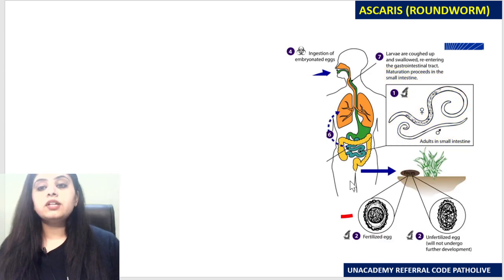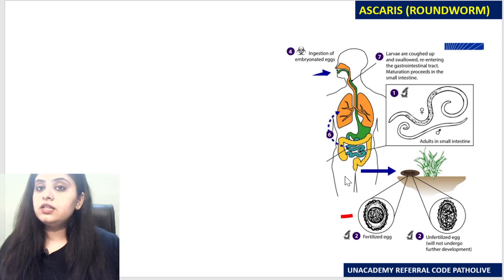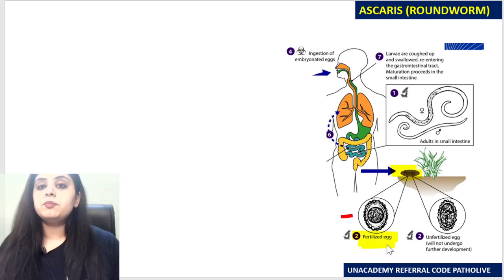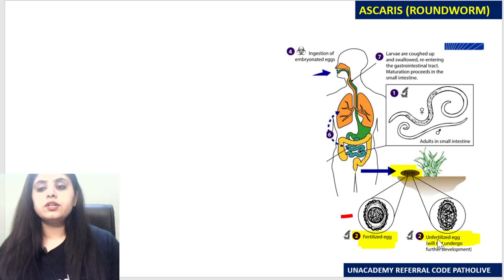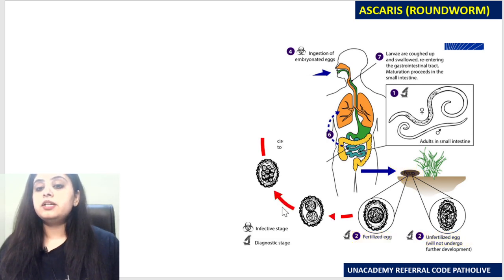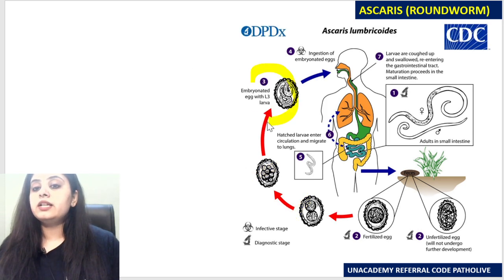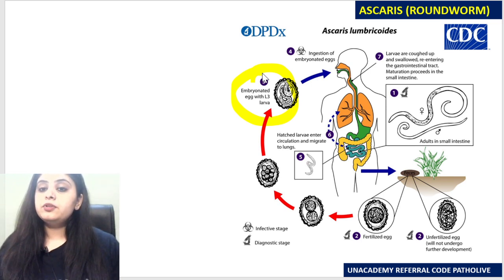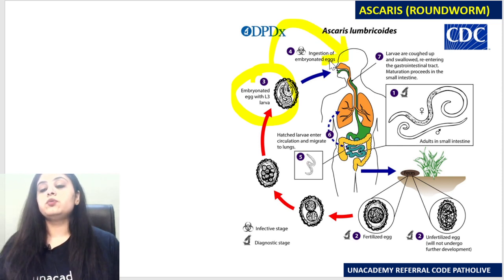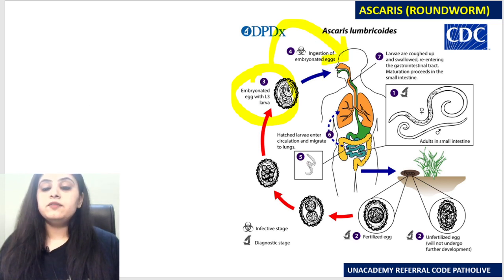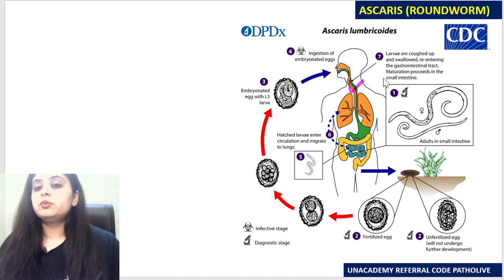When the adults fertilize, they give rise to eggs passed into the faeces. A patient can pass both fertilized eggs and unfertilized eggs. An unfertilized egg will not undergo further development, whereas a fertilized egg can undergo development through multiple divisions, eventually developing a larva inside it — becoming an embryonated egg.